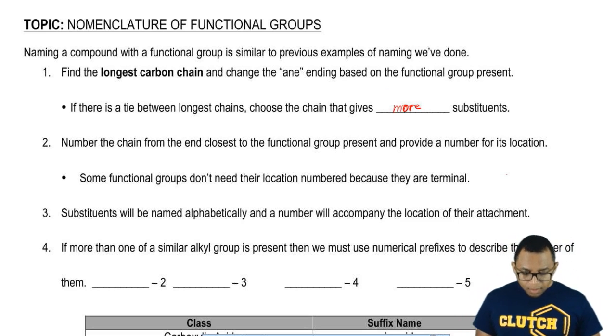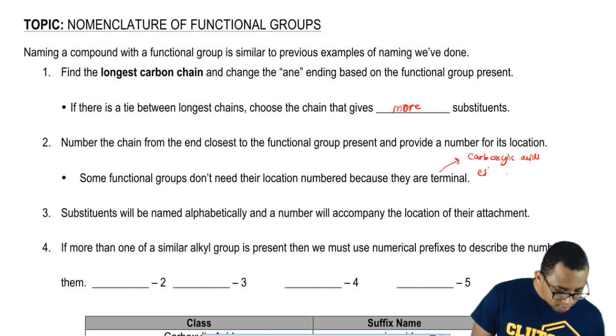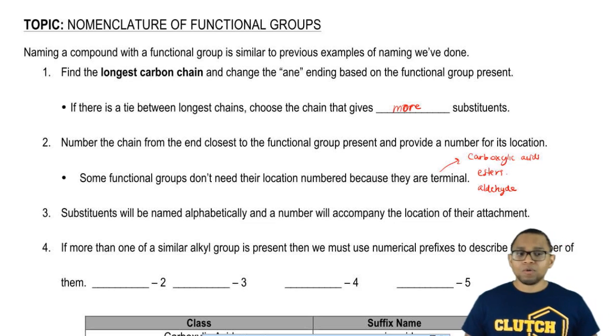Then we're going to number the chain from the end closest to the functional group present and provide a name for its location. Some functional groups don't need their location numbered because they are terminal, meaning they're found at the end. These functional groups would be carboxylic acids, esters, and aldehydes. Their locations don't have to be stated because they're always found at the end.